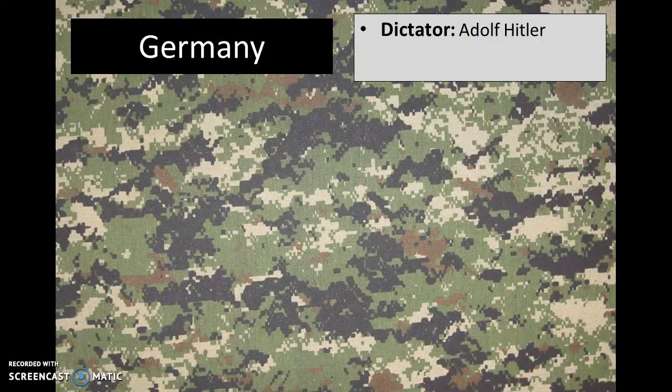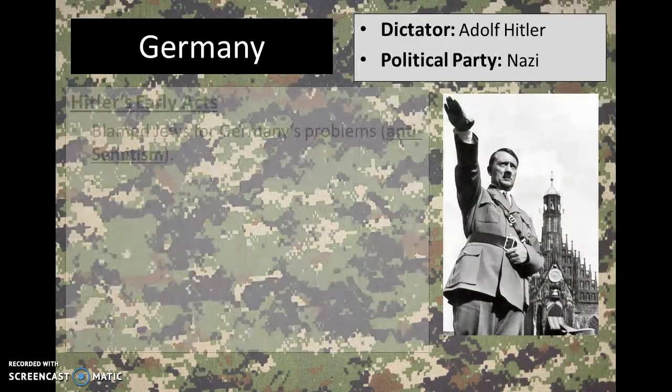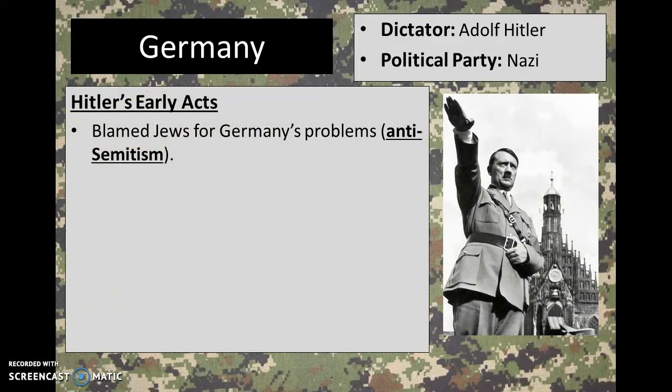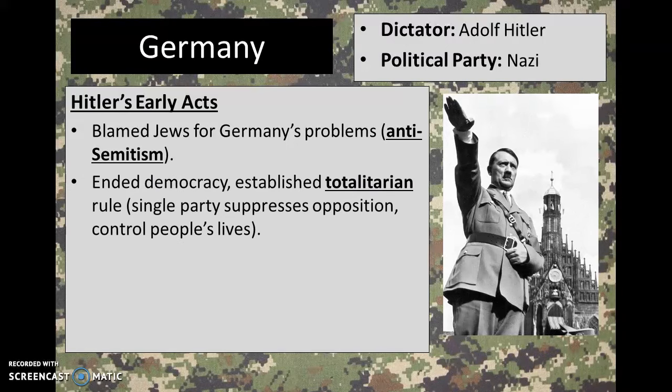Finally, we're going to talk about Germany. The dictator in Germany was Adolf Hitler, and he was part of the Nazi Party. Hitler blamed Jewish people for all of Germany's problems, and this blame of Jewish people is called anti-Semitism. When he came to power, he ended democracy and established totalitarian rule, where a single party holds power, suppresses all opposition, and looks to control every part of citizens' lives. You can see in the word 'totalitarian' the beginning of 'total,' showing the total control that Hitler and the Nazi Party had in Germany.